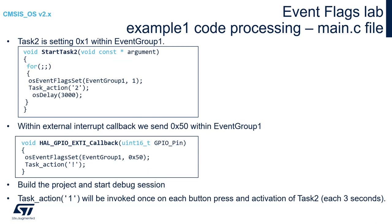Now let's add some code to the other components responsible for Event Flags mask setting. Within the StartTask2 function, which is the entry function for Task2, please add osEventFlagsSet to set 0x01 within the mask of EventGroup1 — it will be OR'd with the already existing value. Then please send '2' over the SWO interface. At the end, Task2 will be sent to the blocked state for 3 seconds using osDelay.